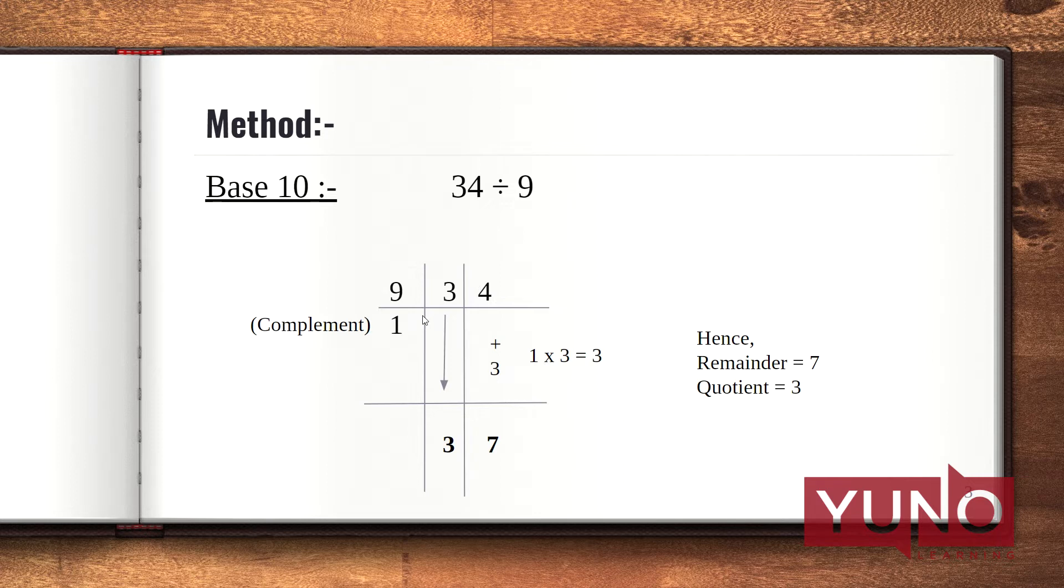Then we need to write the complement of the divisor below it, like we have done here. The complement of 9 is 1. Now copy down the first digit of the dividend as it is, that is 3 is copied down.